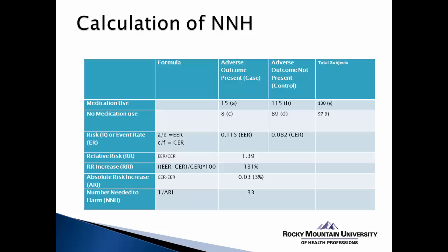SPSS will not automatically calculate these values for us, but we can use SPSS to get a 2x2 contingency table that allows us to do the calculations by hand, which are relatively simple. If you've watched my Numbers Needed to Treat calculation video, you'll notice the formulas are very similar. The biggest difference is basically how we interpret these values.